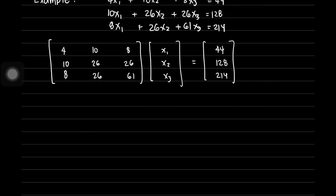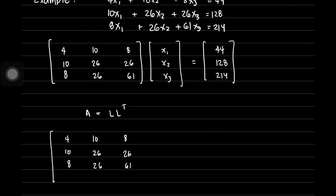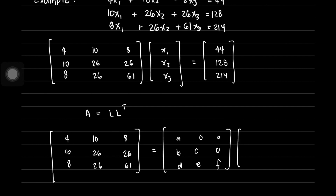Now let us decompose matrix A into its lower triangular matrix L multiplied by the transpose of L. So matrix A — with entries 4, 10, 8; 10, 26, 26; 8, 26, 61 — equals the lower triangular matrix with entries A, B, C; D, E, F; 0, 0, 0 multiplied by its transpose.